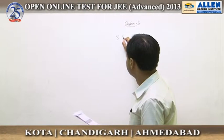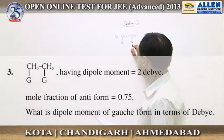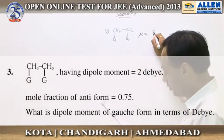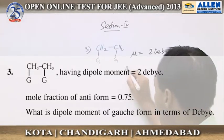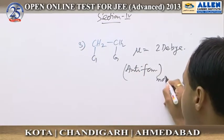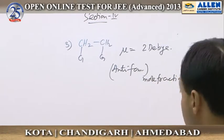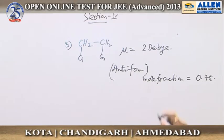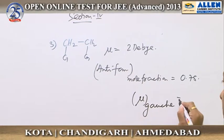Question number 3. It is given that CH2G is a compound with a dipole moment of 2 Debye. The anti-form of this compound has a mole fraction of 0.75. We need to calculate the dipole moment of the gauche form, mu of gauche form.